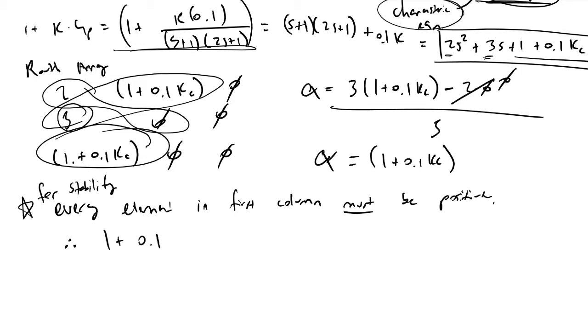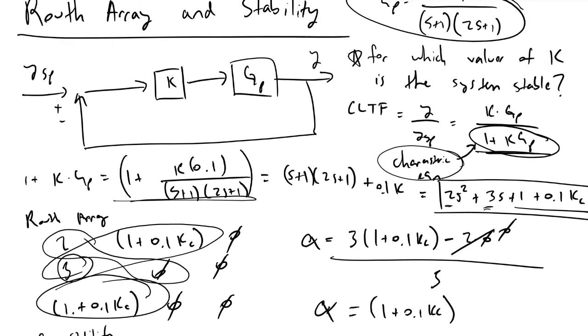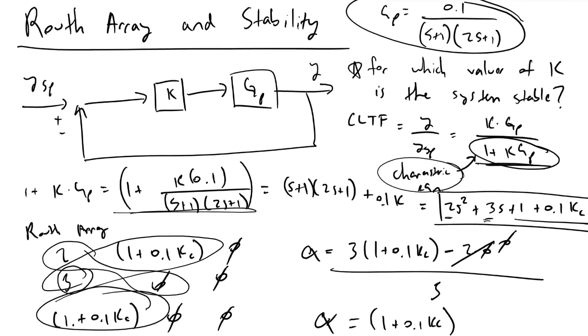If we evaluate this and actually solve for what KC must be, it tells us that KC, or your controller gain K, must be greater than negative 10 for stability. That's how we can evaluate and solve these problems.